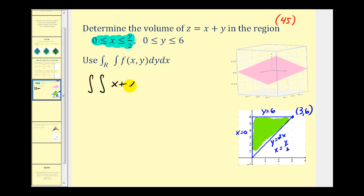This line could be expressed as y equals 2x or x equals y over 2. This would be x equals 0 along here. This point here would be (3, 6) and this segment here would be y equals 6. Let's set this up and integrate with respect to y first and then x. Our function is x plus y. If we integrate with respect to y first, we must write the limits of integration in terms of x.